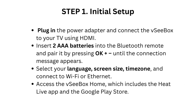Step 1: Initial setup. Plug in the power adapter and connect the VC Box to your TV using HDMI. Insert two AAA batteries into the Bluetooth remote and pair it by pressing OK plus until the connection message appears. Select your language, screen size, time zone, and connect to Wi-Fi or Ethernet.